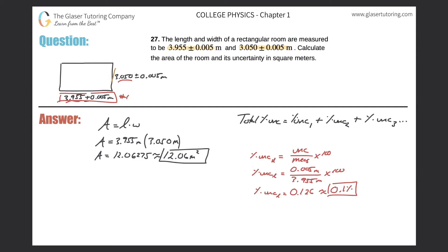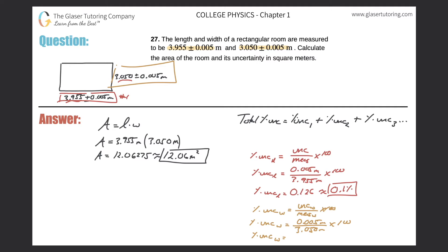Now we do the same thing for the width. The percent uncertainty of the width equals the uncertainty associated with the width divided by the measurement itself, multiplied by 100. So that's 0.005 divided by 3.050, times 100, which comes out to 0.1639. Rounded to one sig fig — again because there's one sig fig in the numerator — it works out to be 0.2%.